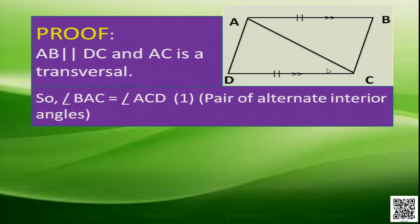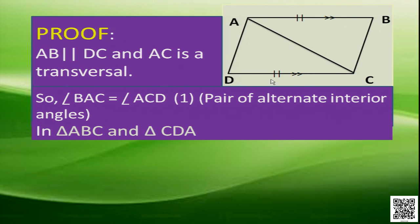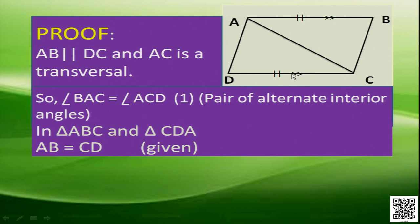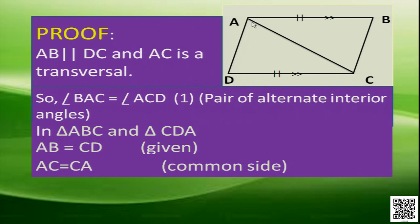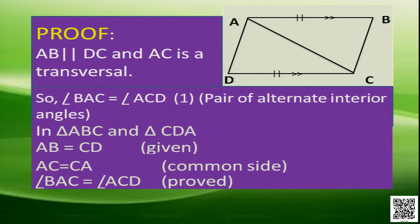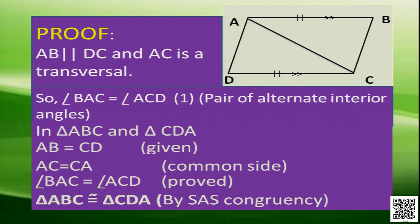Now in triangles ADC and ABC: AB is equal to CD (given), AC is the common side to both triangles, and angle BAC is equal to angle ACD. So these two triangles are congruent by side-angle-side (SAS) congruency.